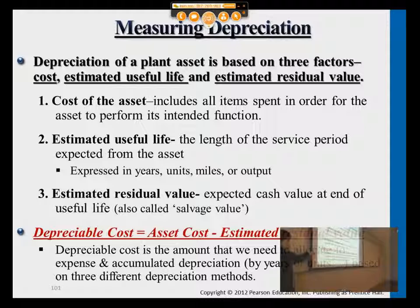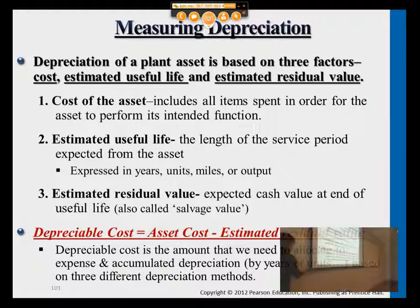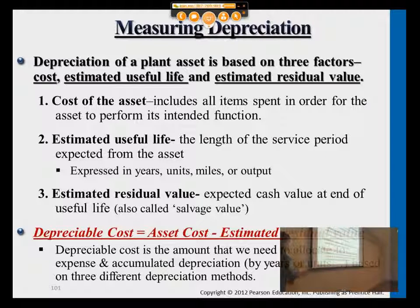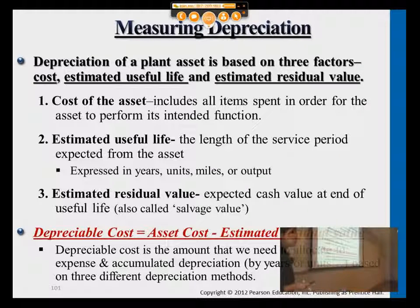That $39,000 is the depreciable cost, and we spread it along the useful life — say 10 years, then we divide by 10; if it's 5 years, we divide by 5. We only depreciate this portion over the years. We don't depreciate the leftover value because that's the amount we estimate we'll receive when we sell or trade the asset.